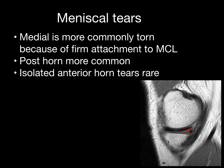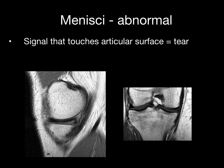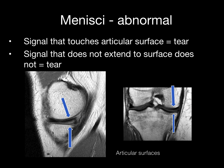An example of a tear of the posterior horn of the medial meniscus. Abnormal menisci with tears consist of a signal abnormality that touches the articular surface — this equals a true tear. Signal that does not extend to the articular surface does not equal a true tear. If the signal extends to the non-articular peripheral surface, it doesn't meet criteria for a true tear. If it extends to the superior or inferior articular surface, this is an example of a true tear.